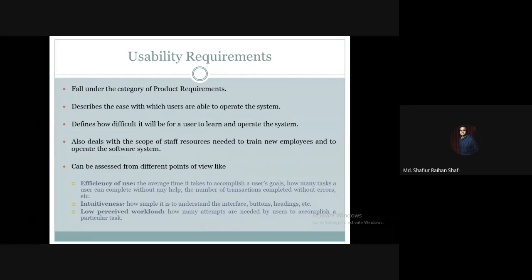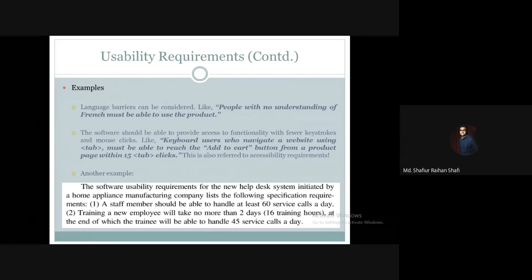Now let's look at some examples of usability requirements. For example, considering a language barrier: people with no understanding of French must also be able to use the product. Another example: the software should be able to provide access to functionality with fewer keystrokes and mouse clicks.